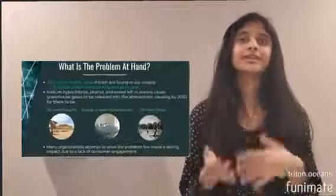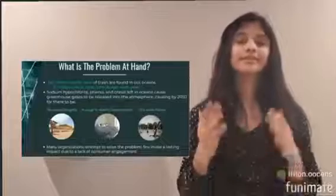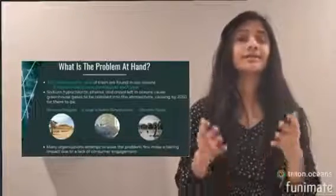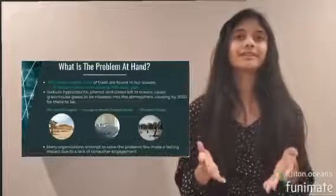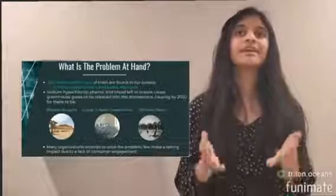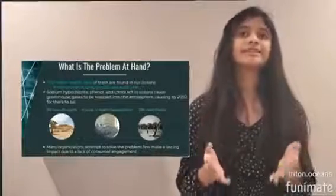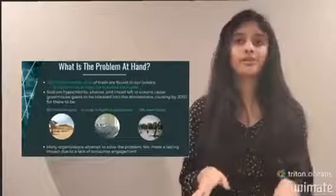Trash contains harmful toxins that end up causing greenhouse gases to be released into our atmosphere. And because of this, in 2050, it is estimated that there will be a 15% increase in droughts and a 23% increase in floods, and a significant rise in health problems for all ages.